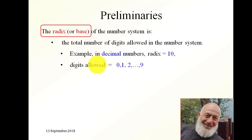There is something called the radix or the base of the numbering system. What is the radix? It is the total number of digits in the system. For example, in the decimal system the radix is 10, or the base is 10 — it has the digits 0 through 9.